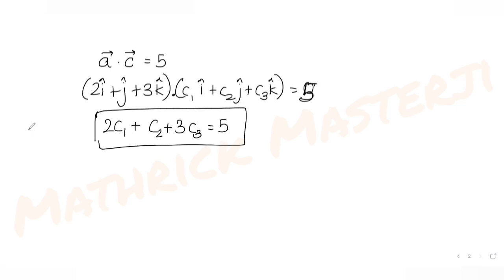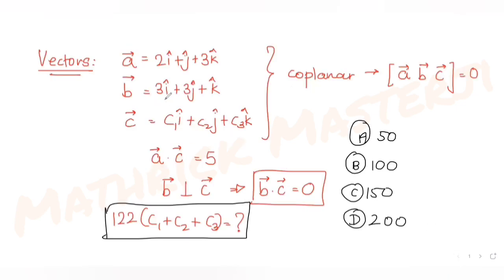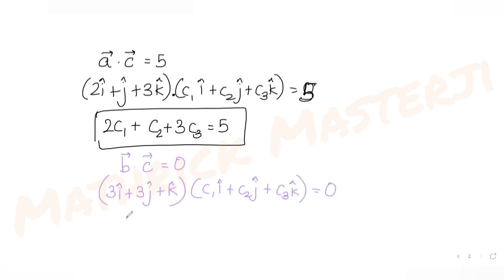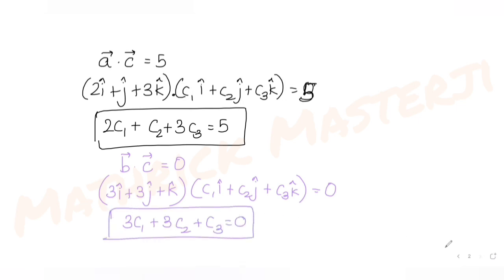The second condition says b · c = 0. With b = 3i + 3j + k and c = c1·i + c2·j + c3·k, the dot product gives us: 3c1 + 3c2 + c3 = 0.